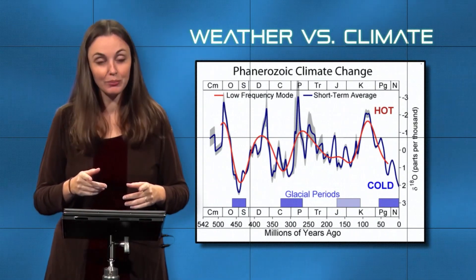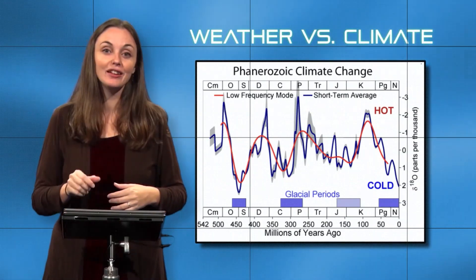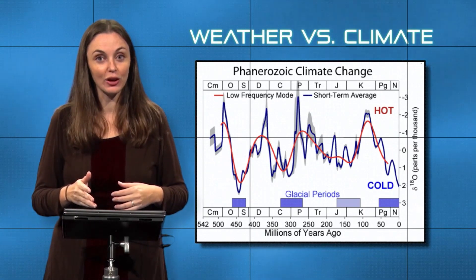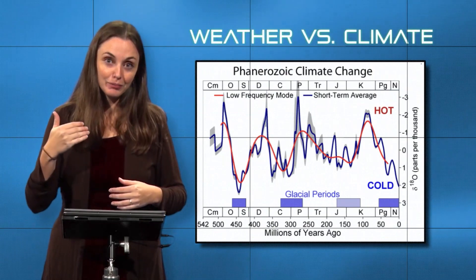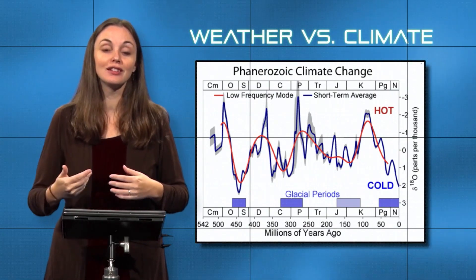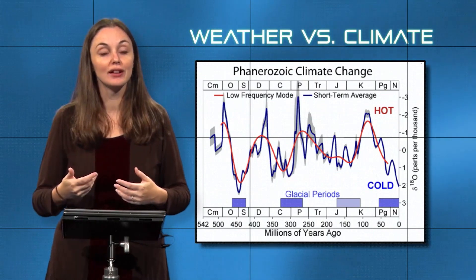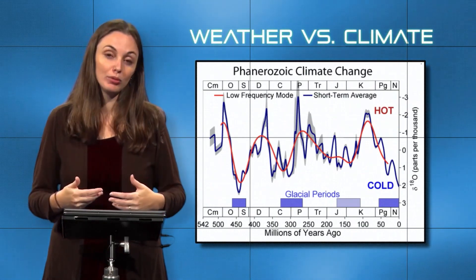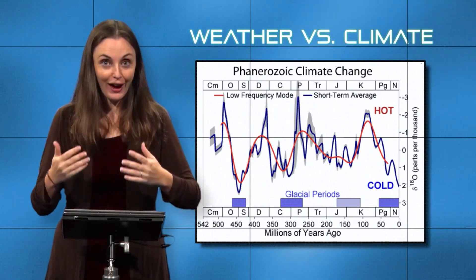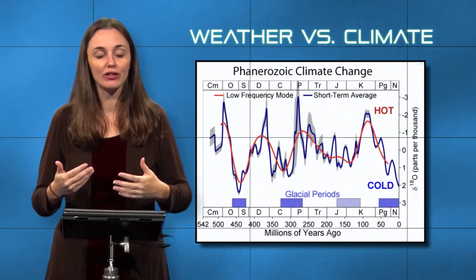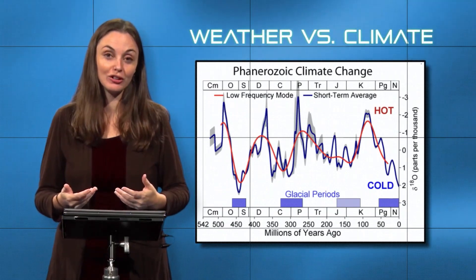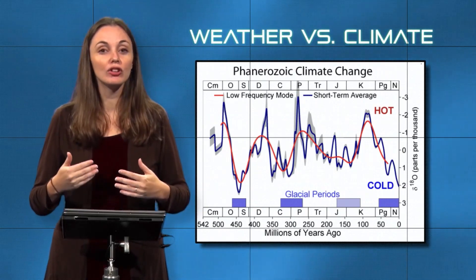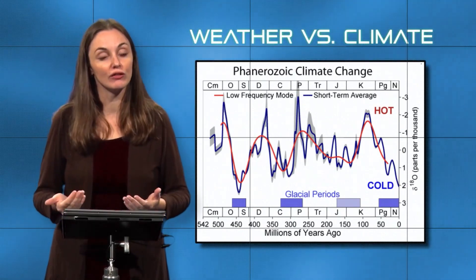A very similar thing happened at the end of the Cretaceous, 65 million years ago. A meteorite impact, possibly coupled with volcanic eruptions, sent massive amounts of ash and debris into the atmosphere, reflecting sunlight and causing rapid cooling. Dinosaurs and many species that thrived in the warm Cretaceous world went extinct as a result. So whether it's warming or cooling, really fast climate change is never a good thing for life on Earth.